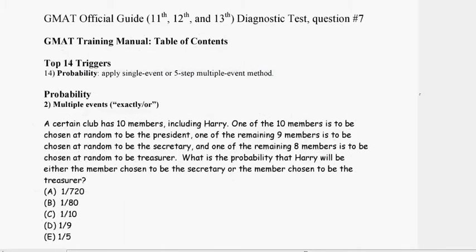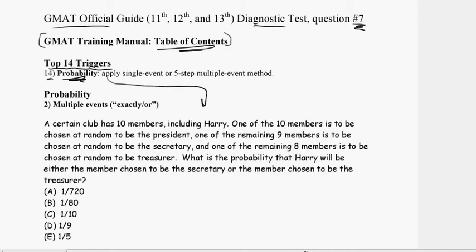This will be part of your packet of UQR questions, what you're seeing on the screen now. So again, this is from the GMAT official guide diagnostic test, and we're going to talk about question number seven. From the GMAT training manual, your table of contents — those of you who have seen my introductory video are familiar with this idea of the trigger method. One of the top 14 triggers, number 14, is probability. As soon as you see probability — like if I go down to this question here — probability is a trigger for me to apply the single event or my killer five-step multiple event method.